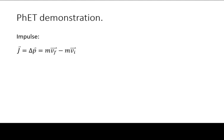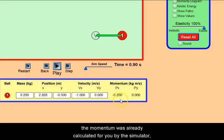Mathematically, if you were asked to calculate the impulse on the object, which is the change in momentum of the object, the momentum was already calculated for you by the simulator.